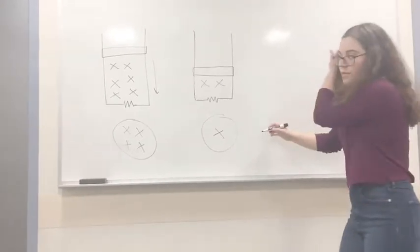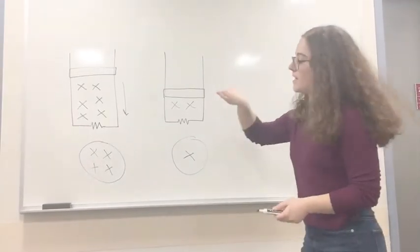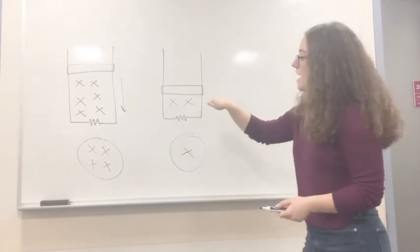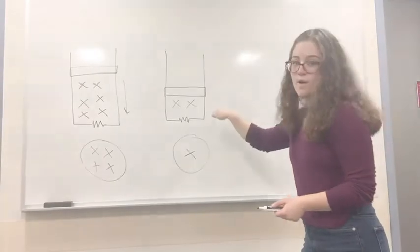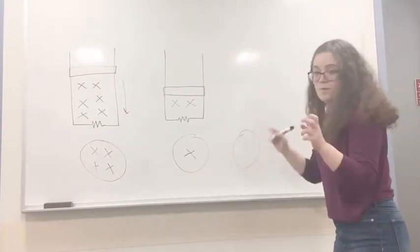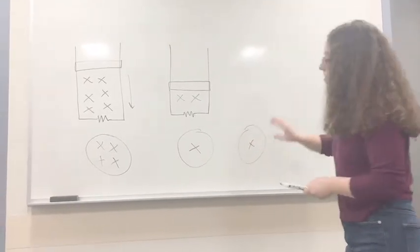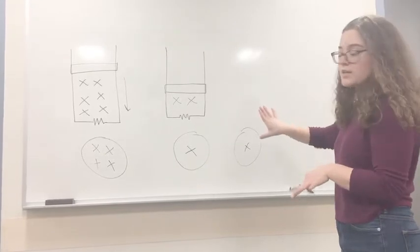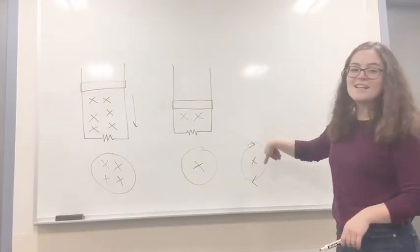So for our to oppose we know we started with a lot into the page. Now we have less into the page so we need more into the page in order to oppose this change, so that is another X. We use our right hand rule to determine the direction of the current and we point our fingers clockwise.